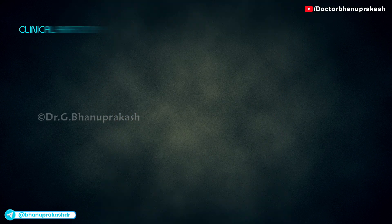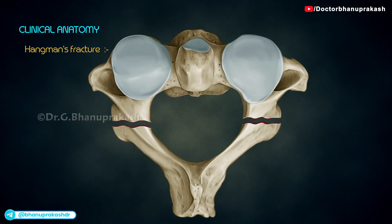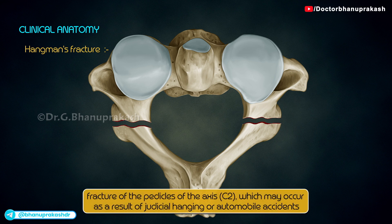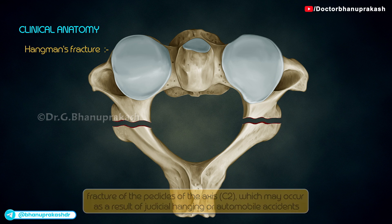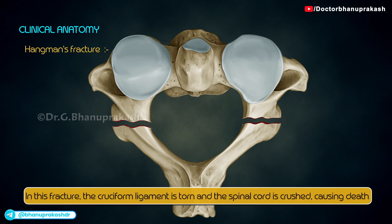Clinical anatomy — Hangman's fracture: it is a fracture of the pedicles of the axis (C2), which may occur as a result of judicial hanging or automobile accidents. In this fracture the cruciform ligament is torn and the spinal cord is crushed, causing death.